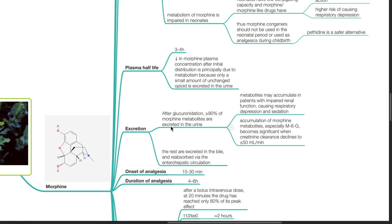Plasma half-life of morphine is 3 to 4 hours. Reduction in morphine plasma concentration after initial distribution is principally due to metabolism because only a small amount of unchanged opiate is excreted in the urine.